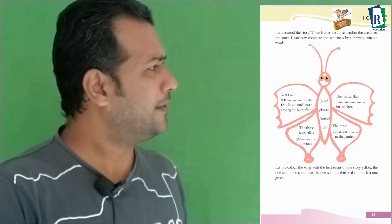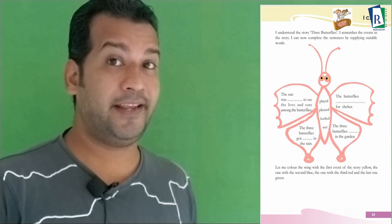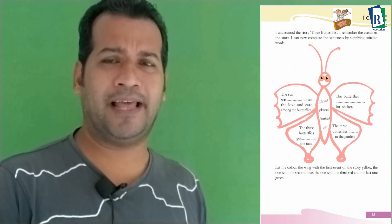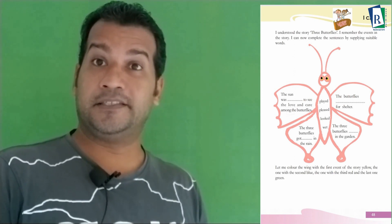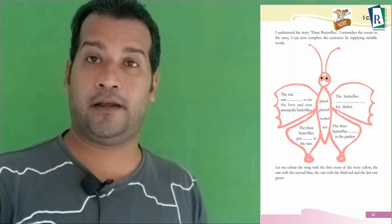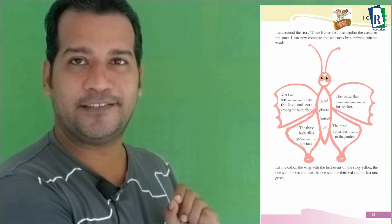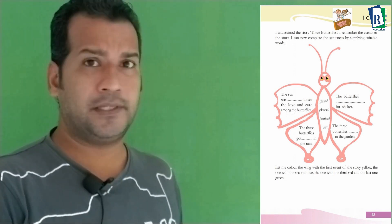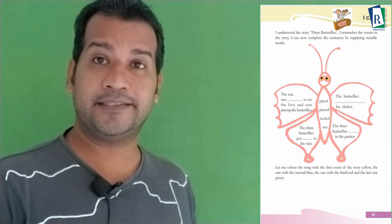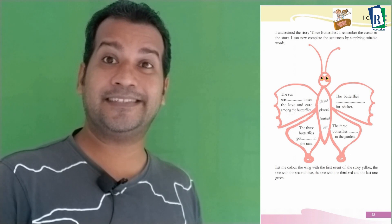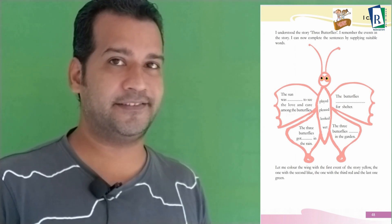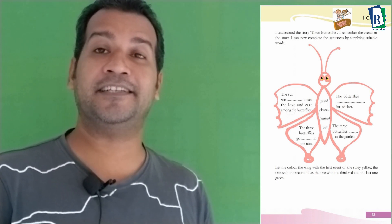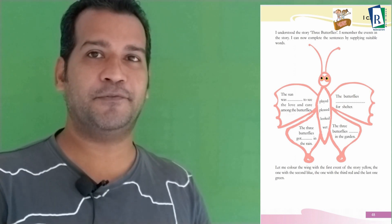The last task: look at the big butterfly picture without color. You can see some sentences on the wings of the butterfly with blanks to fill. 'The sun was blank to see the love and care among the butterflies.' Next: 'The butterflies blank for the shelter.' Then: 'The three butterflies got blank in the rain.' Finally: 'The three butterflies blank in the garden.' Fill these blanks using words from the lesson.